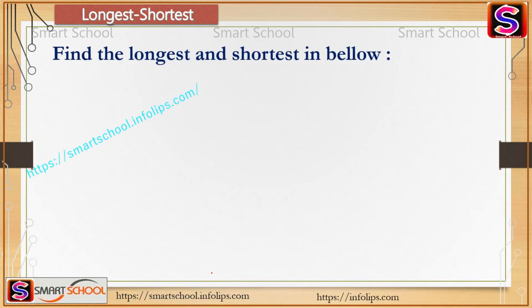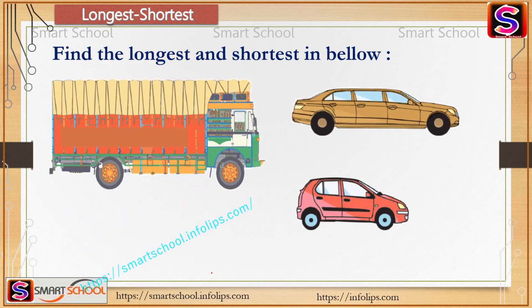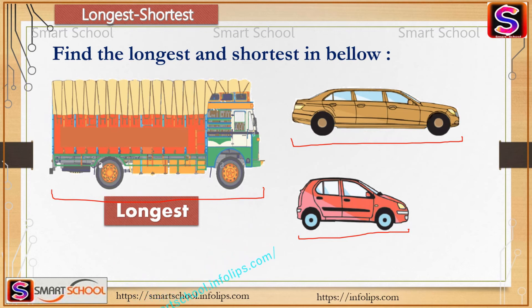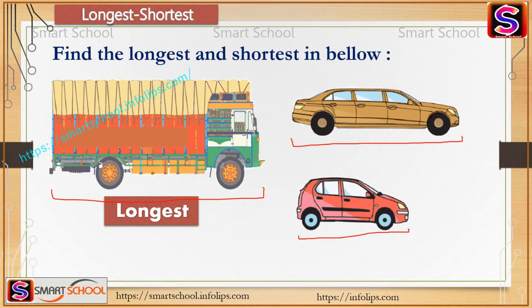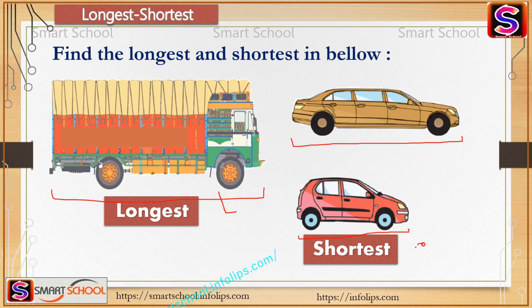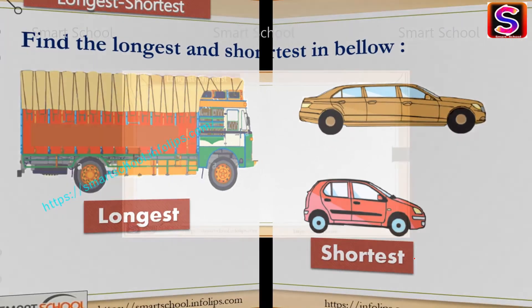Find the longest and shortest in the following. There are three pictures — a truck, a sedan car, and a hatchback car. The truck is the longest because it has more length than the other two vehicles. The small hatchback car is the shortest because it has less length than the other two.